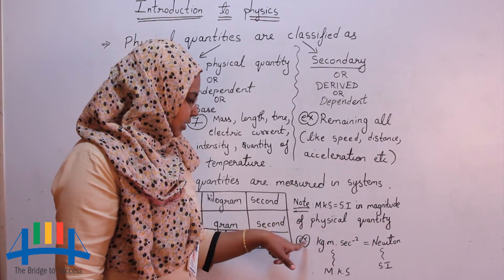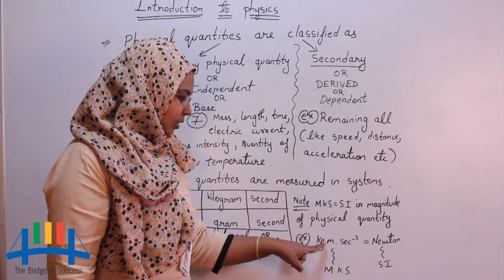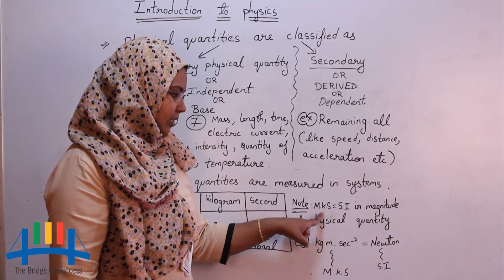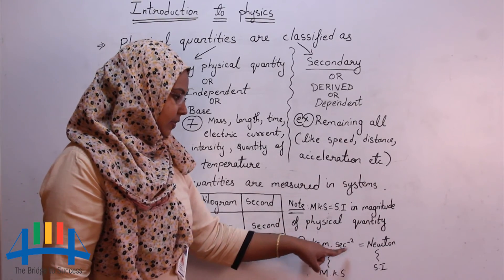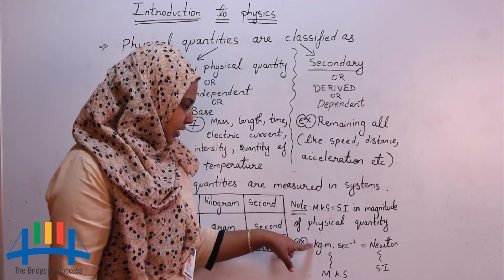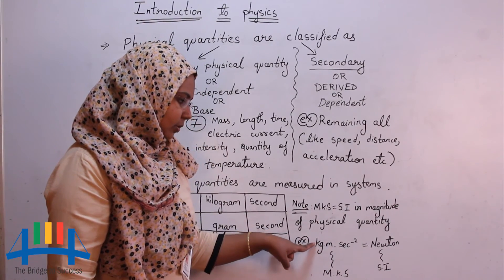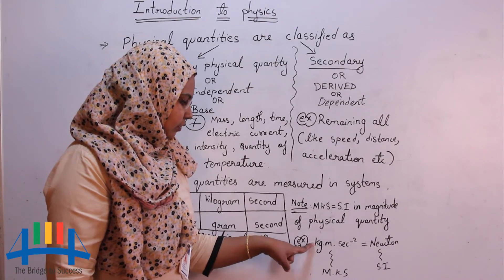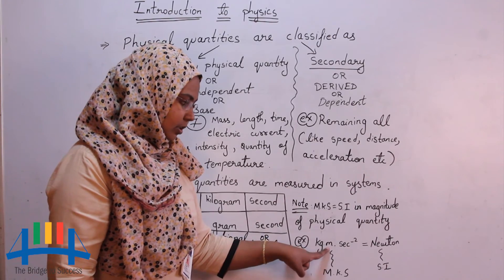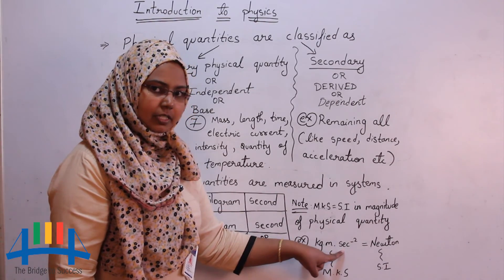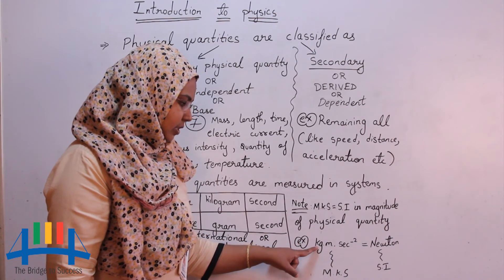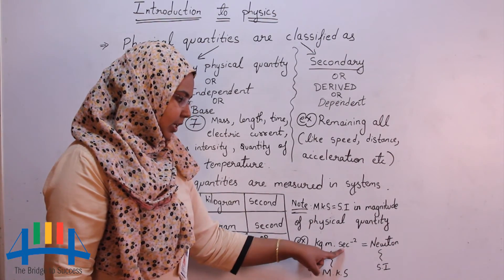For example, the units of force is kg meter into second inverse 2 in MKS system. The same thing is written as Newton in SI system. If you write the units of force in CGS system, you just have to write in kg place gram, in meters place centimeter and time will remain the same. So in MKS system it is kg meter second inverse 2 and in CGS system it is gram centimeter second inverse 2.